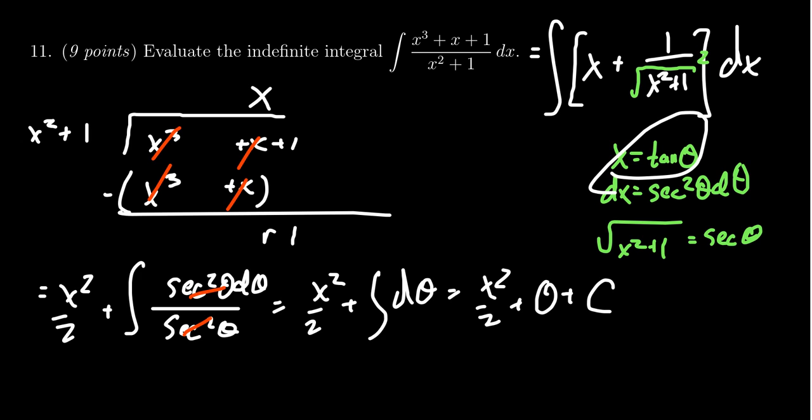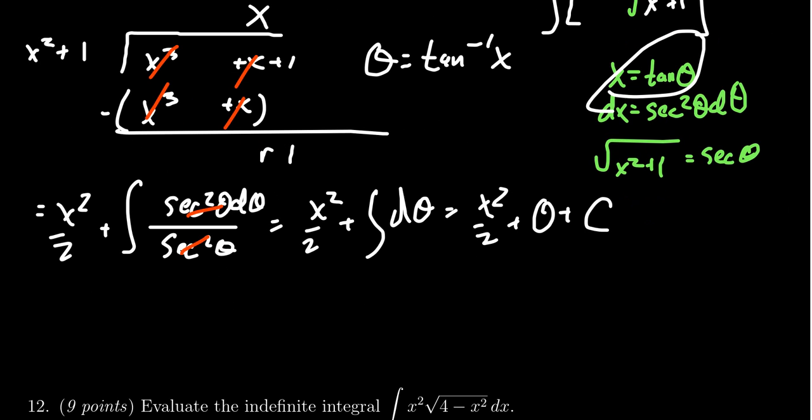And so then coming back to our original substitution, solving for theta. Theta equals tangent inverse of x. And so our final result would then be x squared over 2 plus arctangent of x plus a constant. And this would be our correct result.